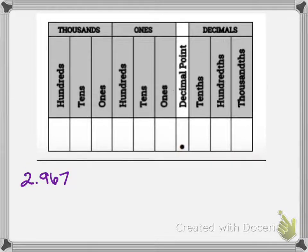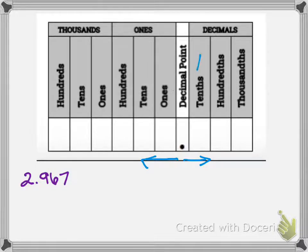To the left of the decimal sign we have our whole numbers, and to the right of our decimal sign we have our decimal numbers, which are part of 1. We start off with tenths, then we move over to the hundredths, and then the thousandths place. They really mirror the other side, except we skip ones — so we have no 'onths.'